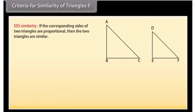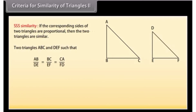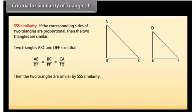SSS Similarity: If the corresponding sides of two triangles are proportional, then the two triangles are similar. For triangles ABC and DEF, if AB/DE = BC/EF = CA/FD, then the two triangles are similar by SSS similarity.